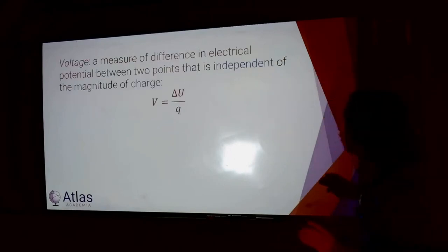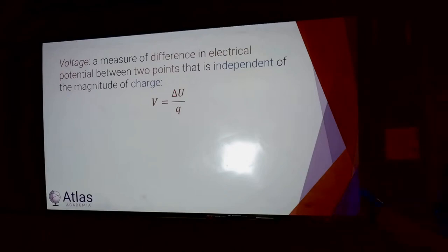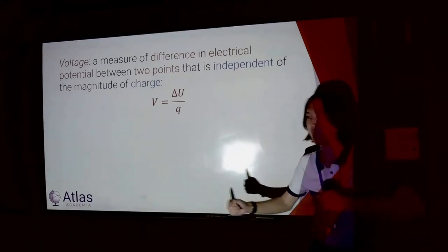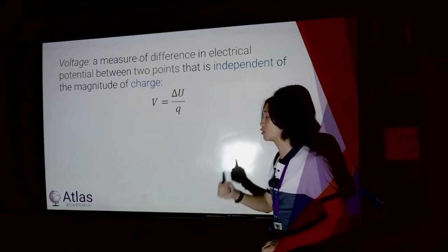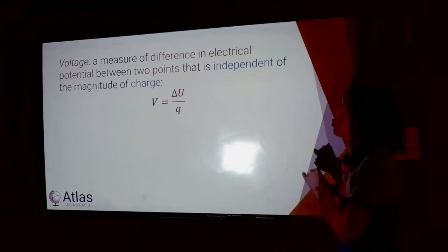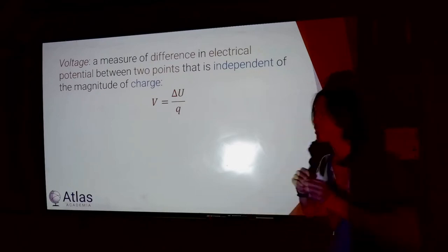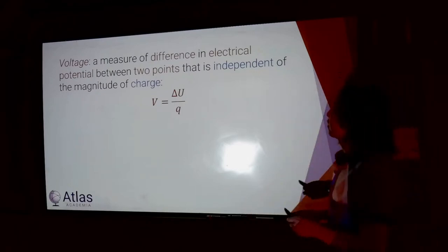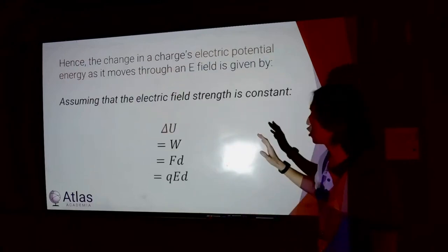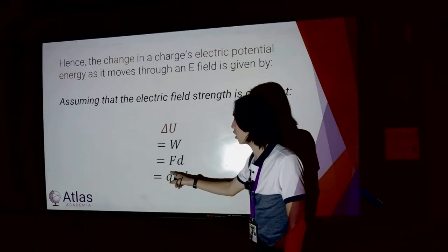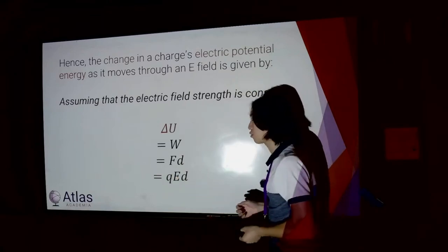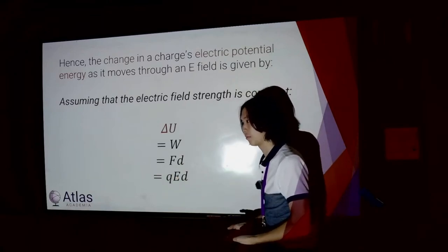That leads us to voltage — it's a definition you can't fully understand until after the example. Voltage is a measure of difference between two points; it is not a thing that happens at a single point. It is the difference in electrical potential between those two points. Electrical potential is independent of the magnitude of charge. So if I have a charge with some electrical potential energy and I replace it with a larger charge, both would have the same voltage.